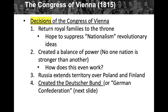The decisions made at the Congress of Vienna: Number one was to return royal families to the throne, with a hope to suppress nationalism and revolutionary ideas. Number two was to create a balance of power, so that no one nation would be stronger than any other. But how does this even work? Nations did not have the same resources, population, or territory. There's always going to be nations stronger than others — and clearly Austria wants to be more powerful.